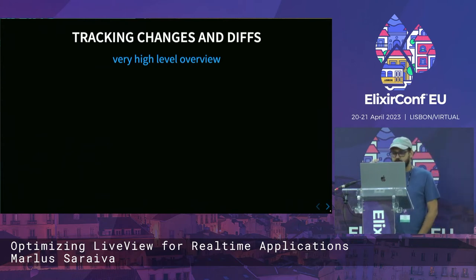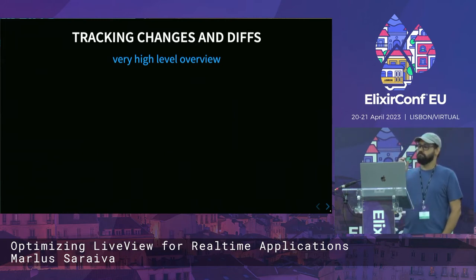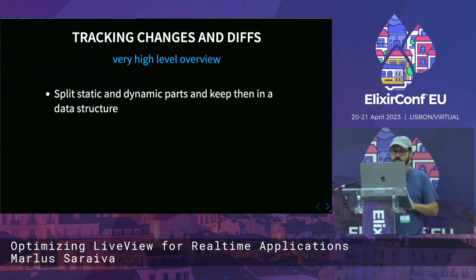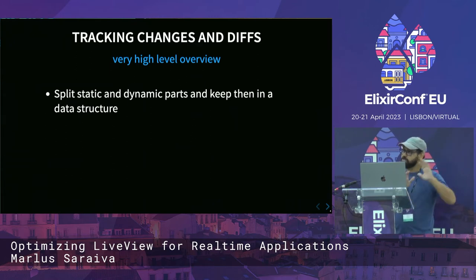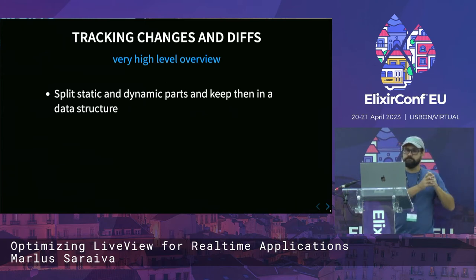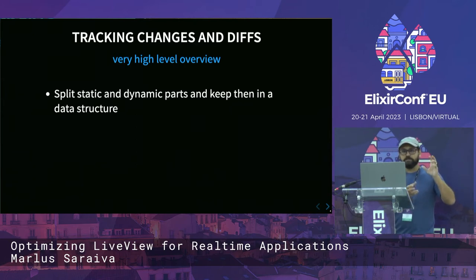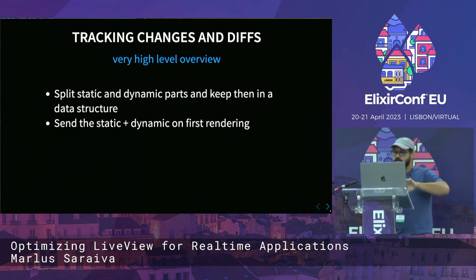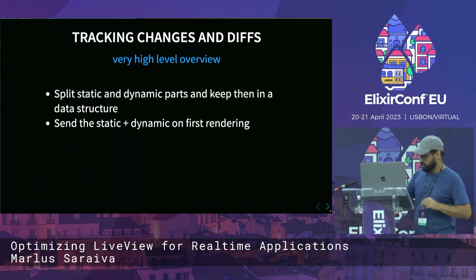This is a very high level overview of the process — there's much more going on — but for this presentation, we're going to assume this is what's done by LiveView. LiveView is going to split the templates you create for your components or LiveViews into static and dynamic parts. Whenever you use a component, instead of returning just a string, it's going to return a data structure holding the static and dynamic parts along with other information separately. After it gets the WebSocket connection, it's going to send all that information — the static and the dynamic part — to the browser.